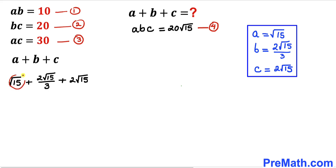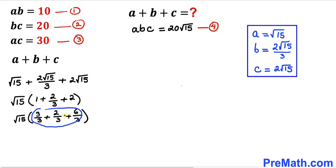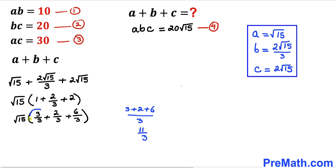We can see that root 15 is common across all terms, so factoring it out gives root 15 times the quantity 1 plus 2/3 plus 2. Rewriting: 1 as 3/3 and 2 as 6/3, we have a common denominator of 3. Adding the numerators: 3 plus 2 plus 6 equals 11, giving 11 over 3 inside the parentheses.